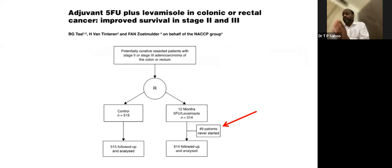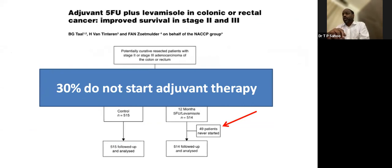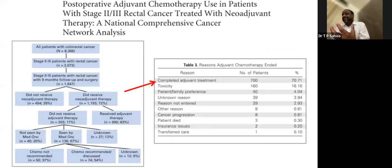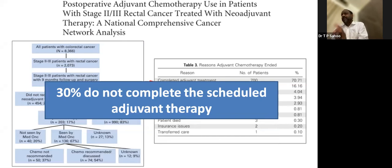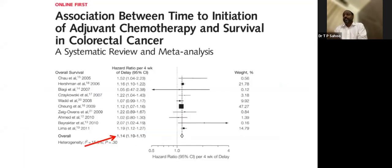Why not adjuvant? Across trials, 30–40% of patients do not start adjuvant therapy. NCCN data from the US shows only 70% completed adjuvant treatment. Post-operatively, multiple problems arise — cardiac events, refusals, complications. Furthermore, a meta-analysis shows that if adjuvant chemotherapy is started beyond 8 weeks post-surgery, there is no benefit. The already-controversial benefit shrinks further with any delay in instituting adjuvant chemotherapy beyond 8 weeks.